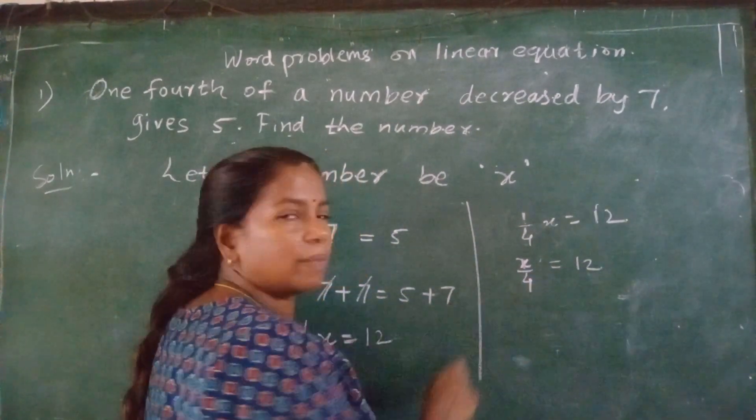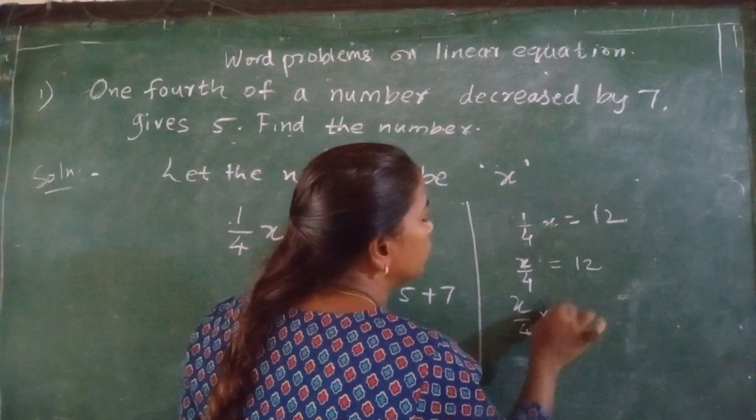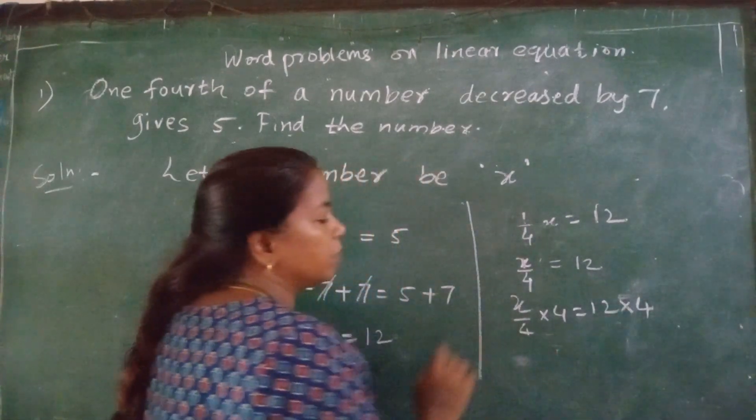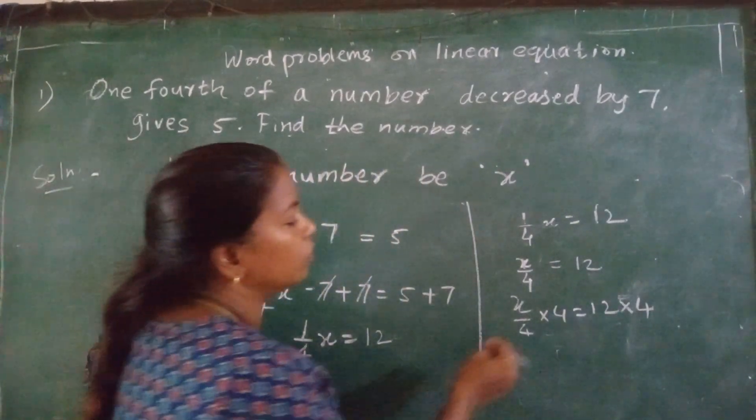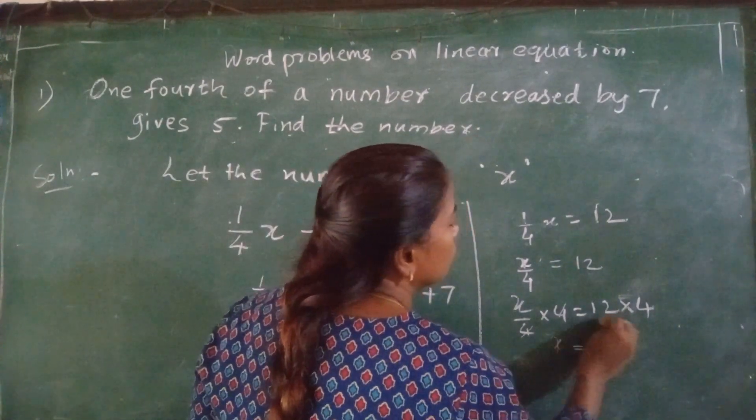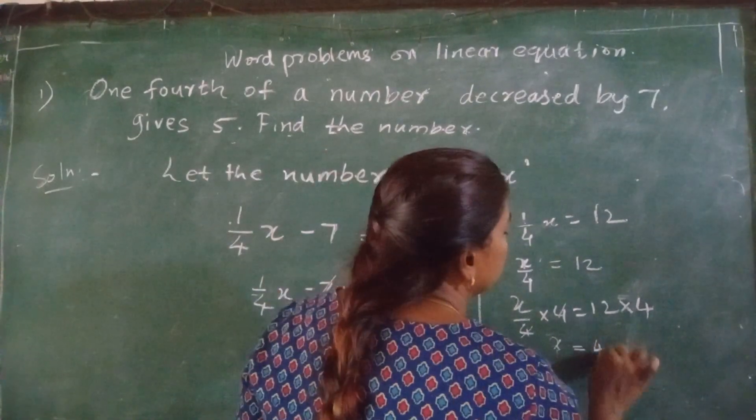Then this 4 is divided by 4. So what will I do? Multiply 4 on both the sides. X upon 4 multiplied by 4. 12 into 4. 4-4 cancel. So X is equal to 12 times 4 is how much? That is 48.